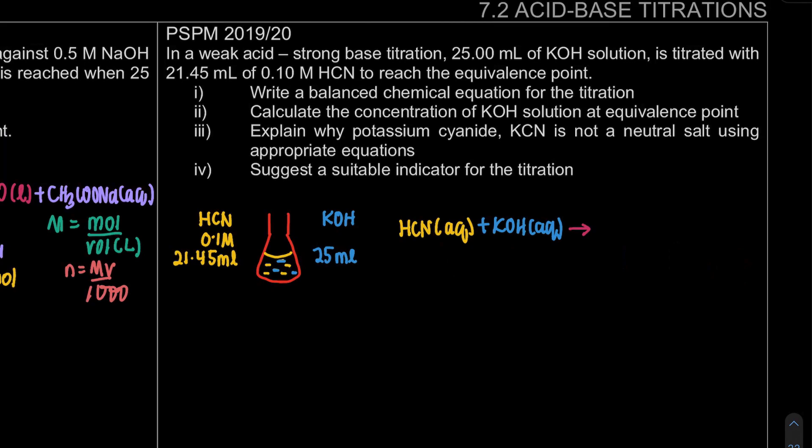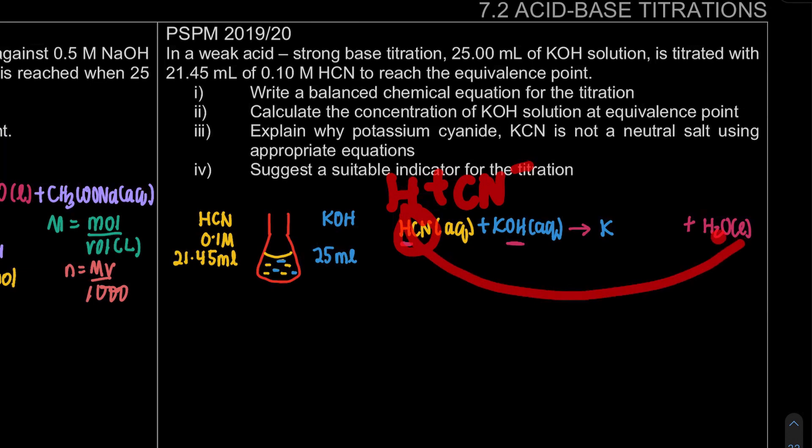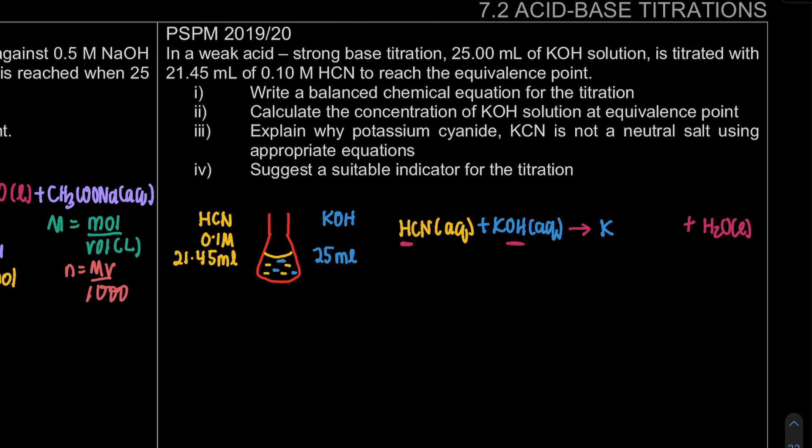So when we react our acid and base, we will form salt and water. Water, where do we get the water? The H from our acids or H from our base. What we have left, K plus OH minus gives us K, and H plus CN minus, H plus already going into H2O, what we have left is CN. So we become KCN aqueous. That's the first question where they ask you to write down the equation.